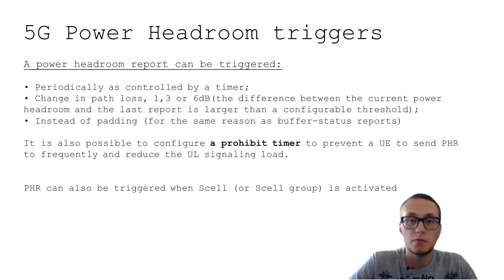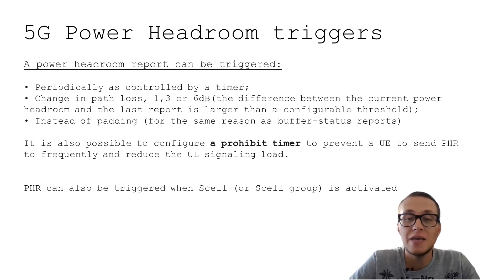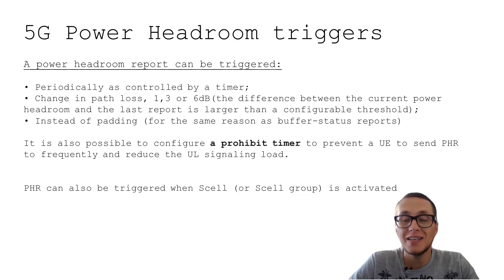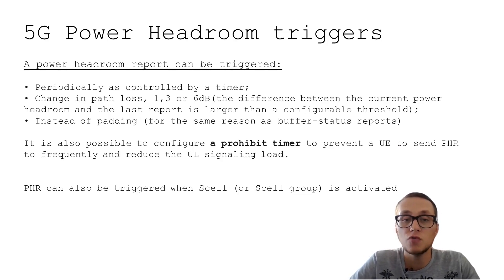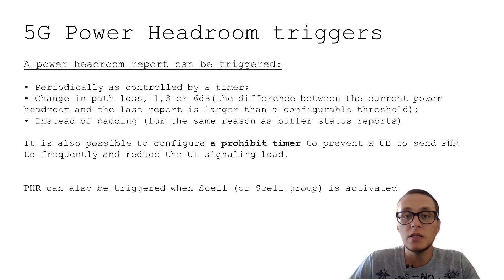Now let's look at how 5G power headroom reports can be triggered. First, it can be triggered periodically, as controlled by a special timer. Triggers can also occur due to a change in path loss beyond a certain threshold — one, three, or six dB. The trigger can also be the same as for a buffer status report. It is also possible to configure a prohibit timer to prevent the UE from sending power headroom reports too frequently.